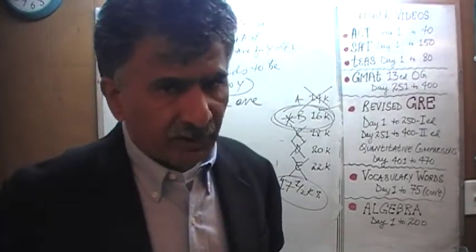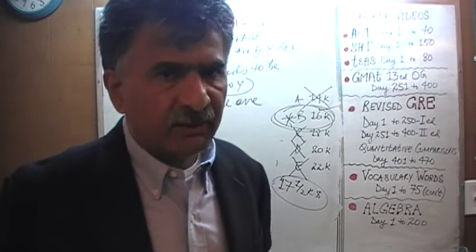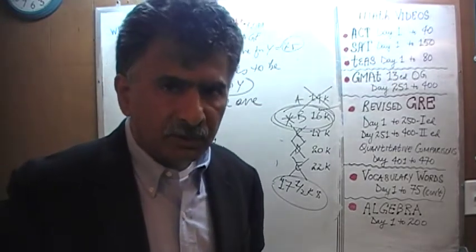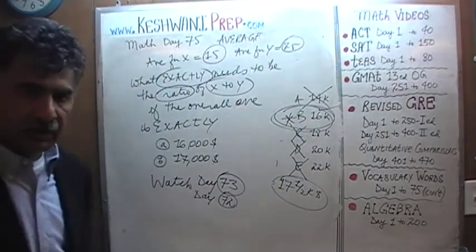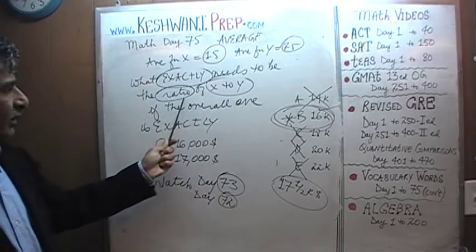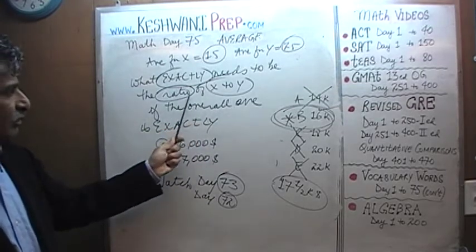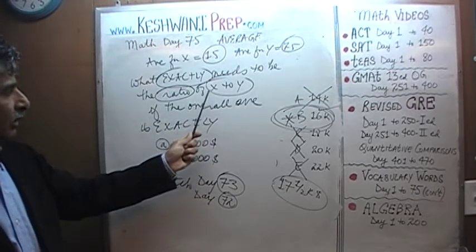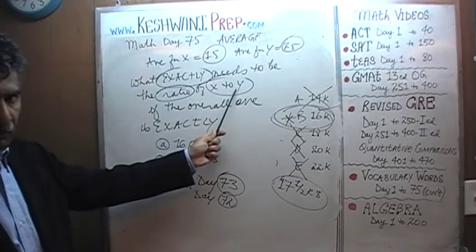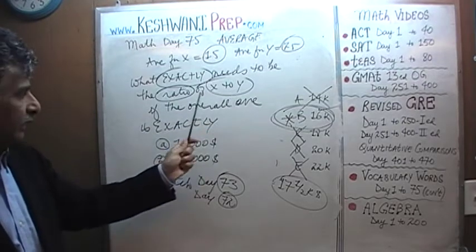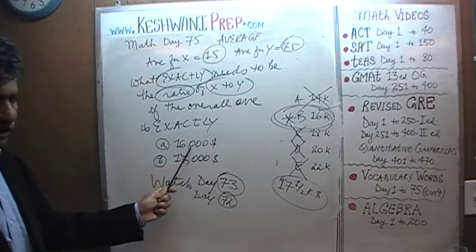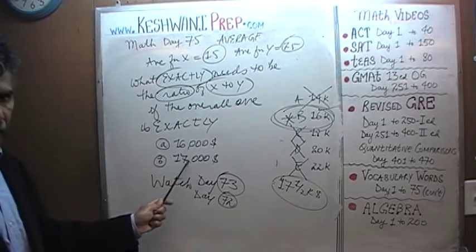Where we left off yesterday — I'm not going to go through exactly what we did, so watch yesterday's video. Where we left off was that we created a new problem. The homework problem was: what exactly needs to be the ratio of the number of people in department X to the number of people in department Y in order for the overall average to be exactly $16,000 or $17,000?